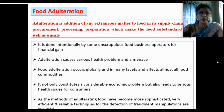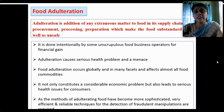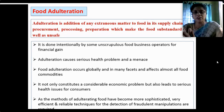Adulteration is done intentionally by unscrupulous food business operators for financial gain. It causes serious health problems and is a menace that occurs globally, affecting all food commodities. It not only constitutes an economic problem but creates serious health issues for consumers. All methods of adulterating food have become very sophisticated, making it high time we develop efficient and reliable techniques to reduce these fraudulent manipulations.